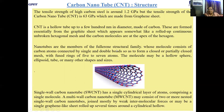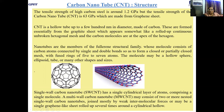Carbon nanotubes are members of the fullerene structural family, where molecules consist of carbon atoms connected by single and double bonds forming closed or partially closed mesh with fused rings of five to seven atoms. The molecules may be hollow spheres, ellipsoids, tubes, or other shapes. This fullerene ring structure gives carbon nanotubes their extraordinary strength of 63 GPa.